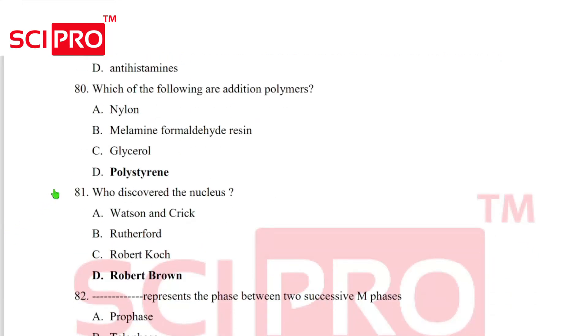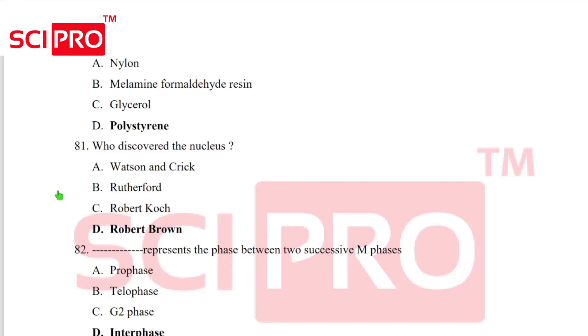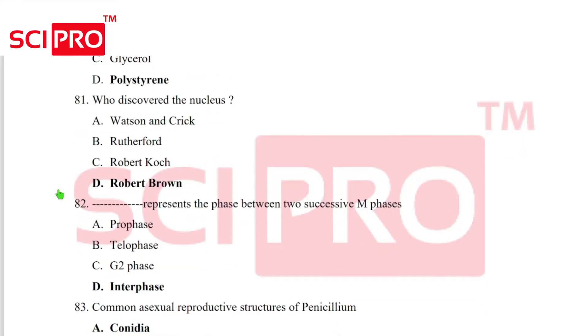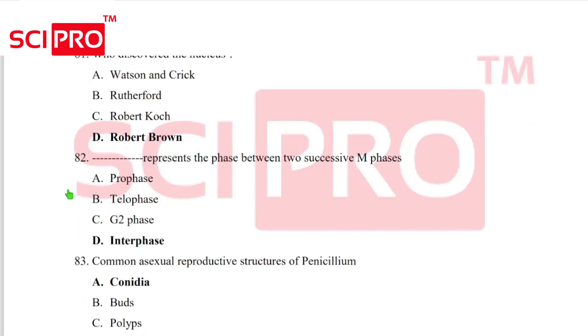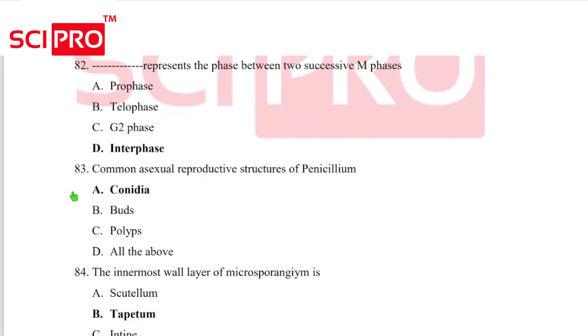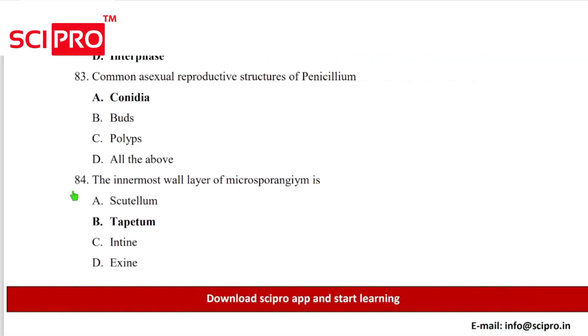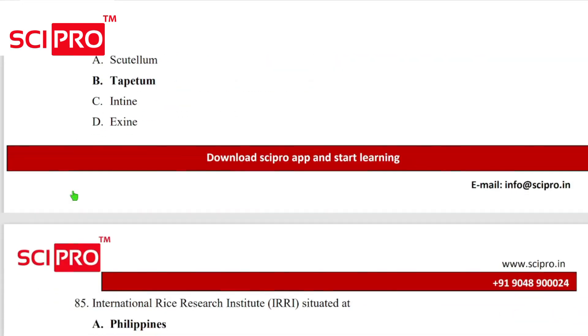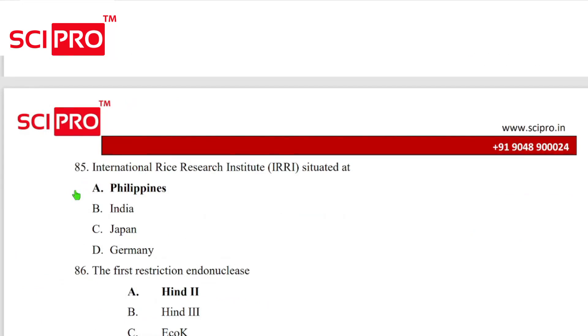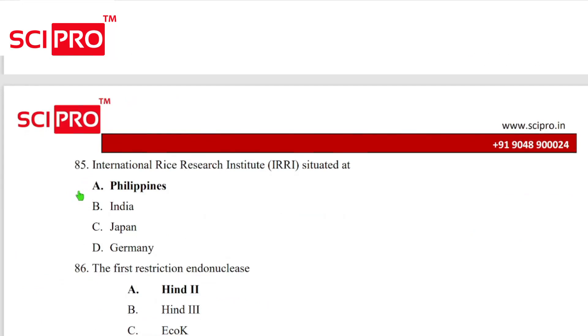Question number 81, who discovered nucleus? Robert Brown. Question number 82, interphase represents a phase between two successive M phase. Question 83, common essential reproductive structures of pencillium, conidium. Question 84, the innermost wall layer of microsporangium is answer B, tapetum. Question number 85, the International Rice Research Institute situated at Philippines.